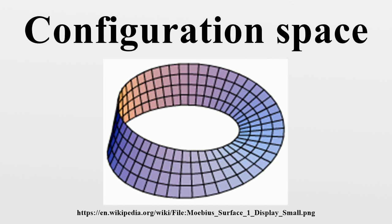The most common notion of configuration space in mathematics is the set of n-element subsets of a topological space. This set is given a topology by considering it as a quotient where Sₙ is the symmetric group acting by permuting the coordinates. Typically, the resulting space is called the configuration space of n unordered points, and the related space is called the configuration space of n ordered or labeled points. The space of n ordered not necessarily distinct points is simply Xⁿ if the original space is a manifold. The configuration space of distinct unordered points is also a manifold, while the configuration space of not necessarily distinct unordered points is instead an orbifold.